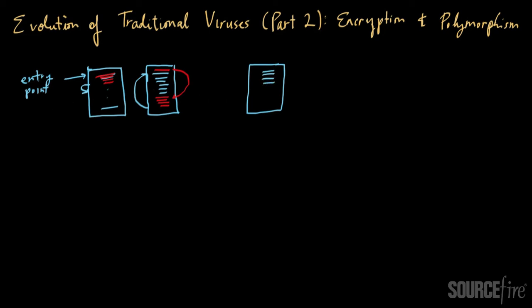Now what the virus would do is it would have two parts. The first part of the virus would do the usual thing, it would modify the entry point, and then it would append a decryption routine. The decryption routine itself would be one part of the virus, and the rest of the virus would be an encrypted payload.